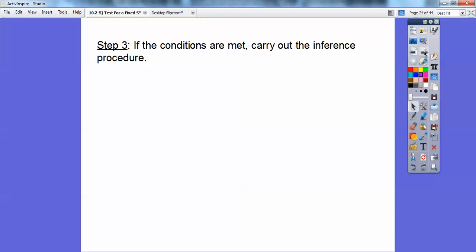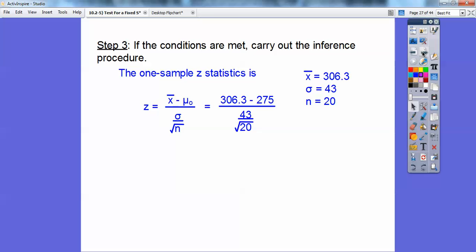So step three, if the conditions are met, yes, write this down, carry out the inference procedure. All right, so the one-sample Z statistic is that formula right there. We're going to go ahead and plug them in. Recall from before that the mean was 306.3, the standard deviation was 43, and the sample size was 20. So plugging those in, there you go, and you get 3.26. Okay, so that's my Z score that goes right here, that goes inside of there. So my absolute value is 3.26.